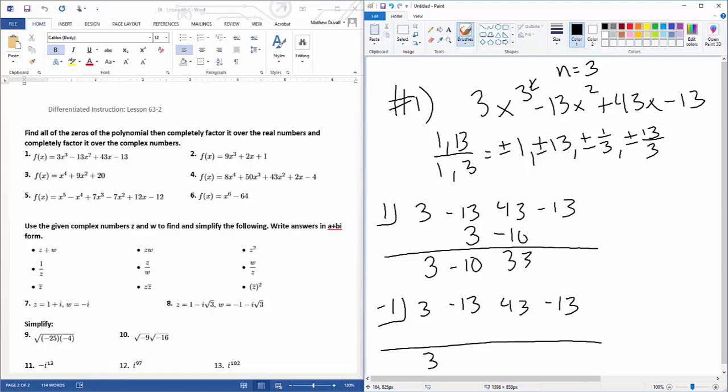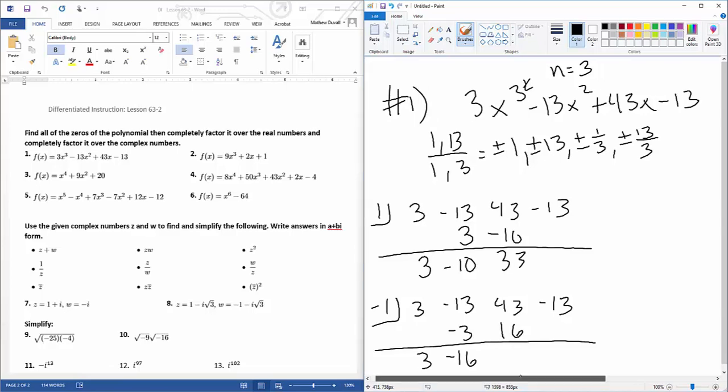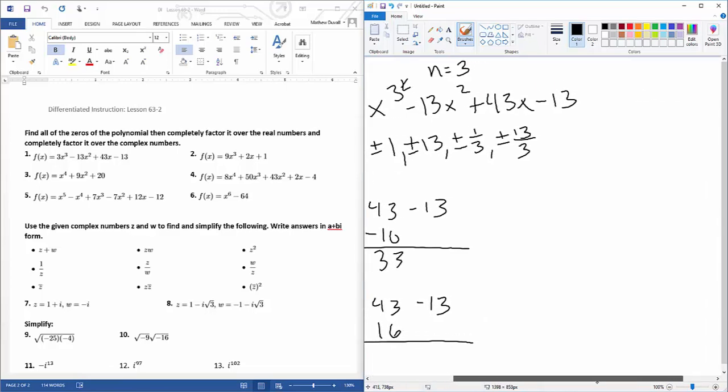Let's try a negative 1. Bring down 3, multiply, add, multiply. Okay, that's not going to work either.